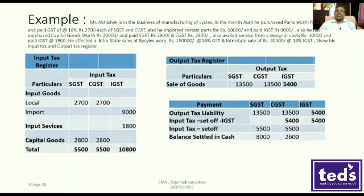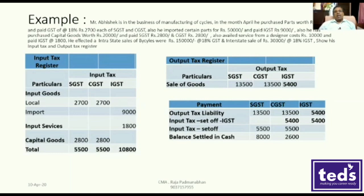Then they have IGST. So a service transaction, a regular goods transaction — it is very important. It is a capital goods transaction. This is an input. In fact, it is affected by the cycles. It is 18% GST. This includes 30,000 at 18% IGST. If they have the input tax register, the output tax register, and the liability set up, then they have a problem. For goods local transactions, they have SGST or more.